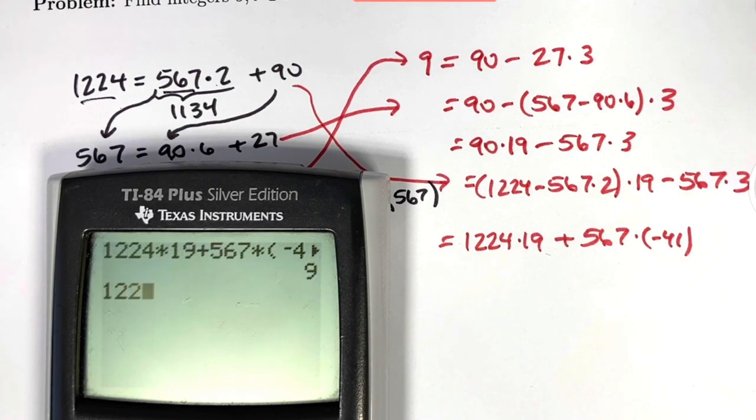1224 times 19 plus 567 times negative 41 gives you 9. Of course, that's the same as 1224 times 19 minus 567 times 41. The GCD of these two numbers has been written as a linear combination of those two numbers. This fact is more useful than you might imagine. It has many applications in number theory and abstract algebra. Thanks for watching.